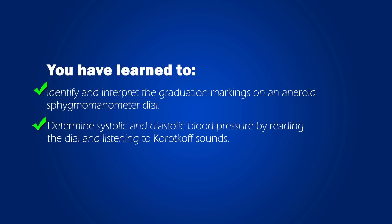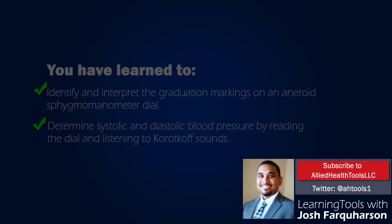And there you have it. You have learned to identify and interpret the graduation markings on an aneroid sphygmomanometer dial and determine the systolic and diastolic blood pressure by reading the dial and listening to the Korotkov sounds. To stay up to date on other allied health learning tools, you can follow me on Twitter at AHTools1 or subscribe to my Allied Health Tools YouTube channel. Thank you for watching this video.